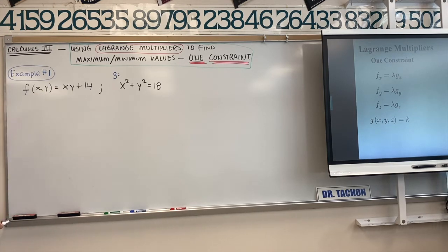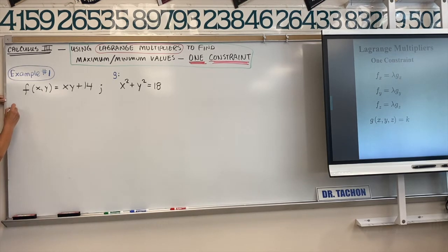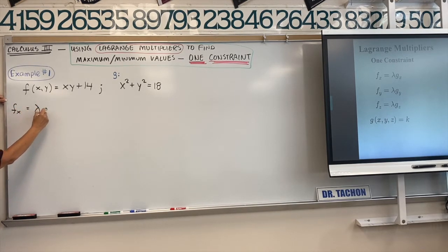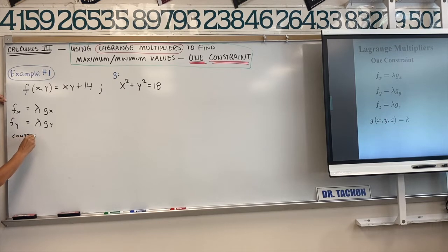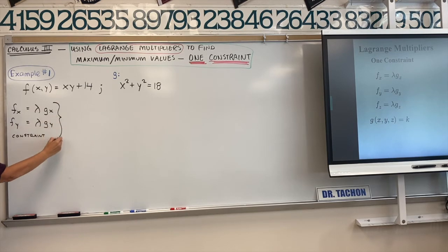We only have two variables here, x and y, not three. So our system: take the partial of the surface with respect to x and set it equal to lambda times the partial of the constraint with respect to x. Take the partial with respect to y, set that equal to lambda times the partial of the constraint with respect to y, and include the constraint. We'll use these three equations to solve the system and get our critical points.